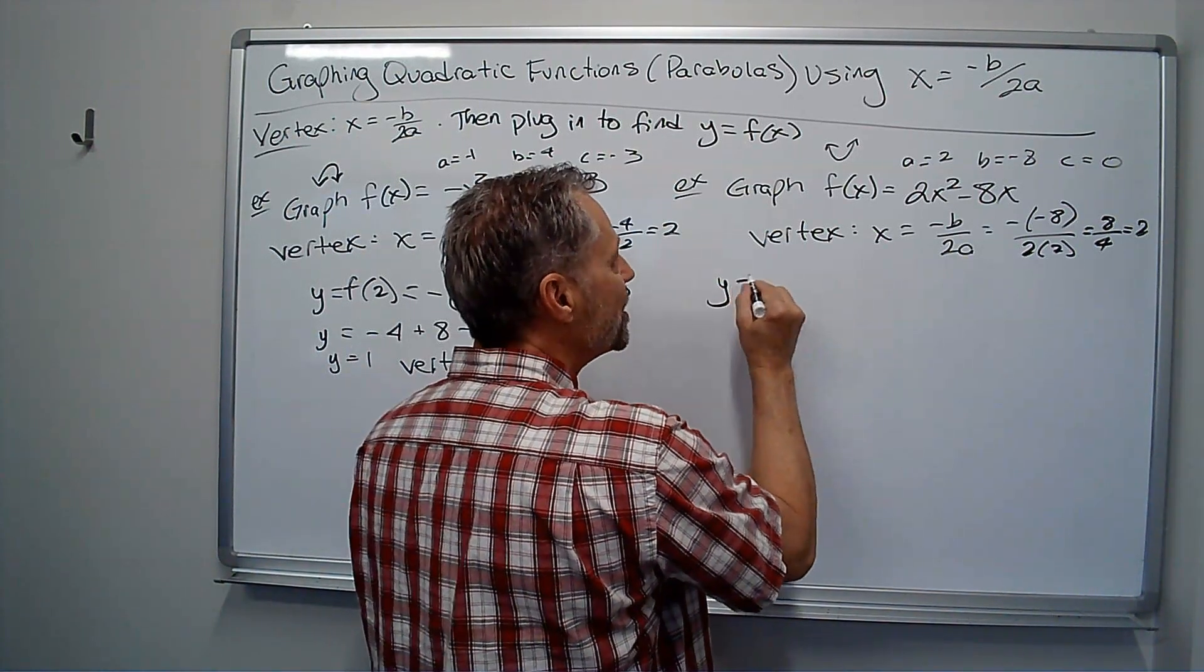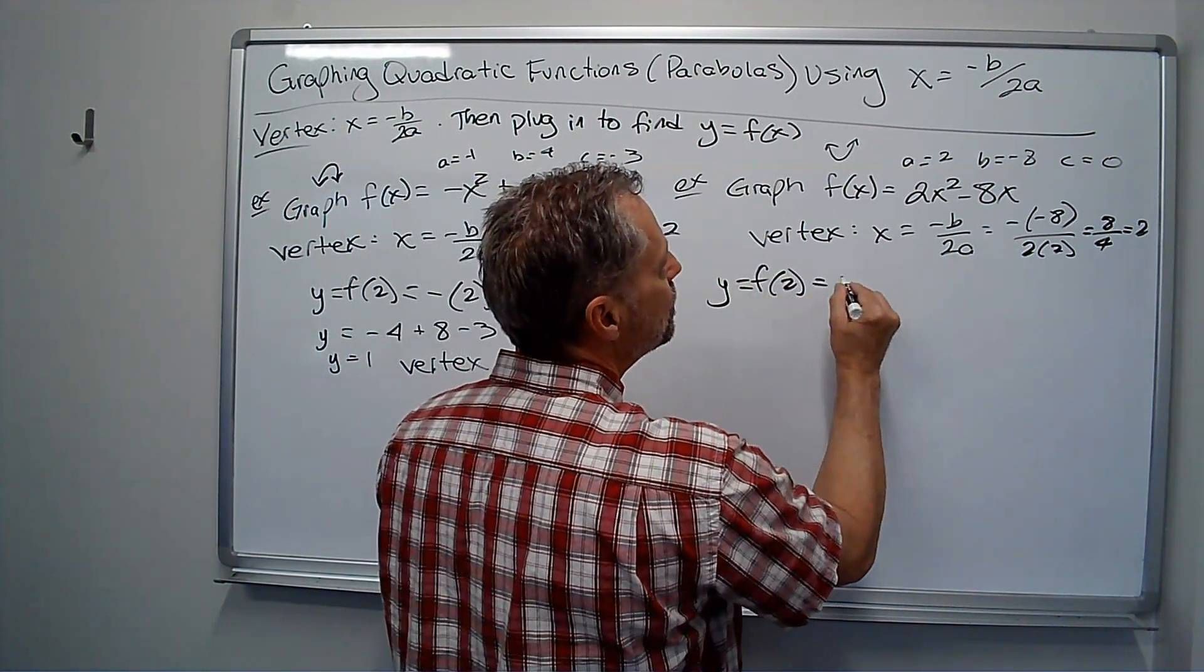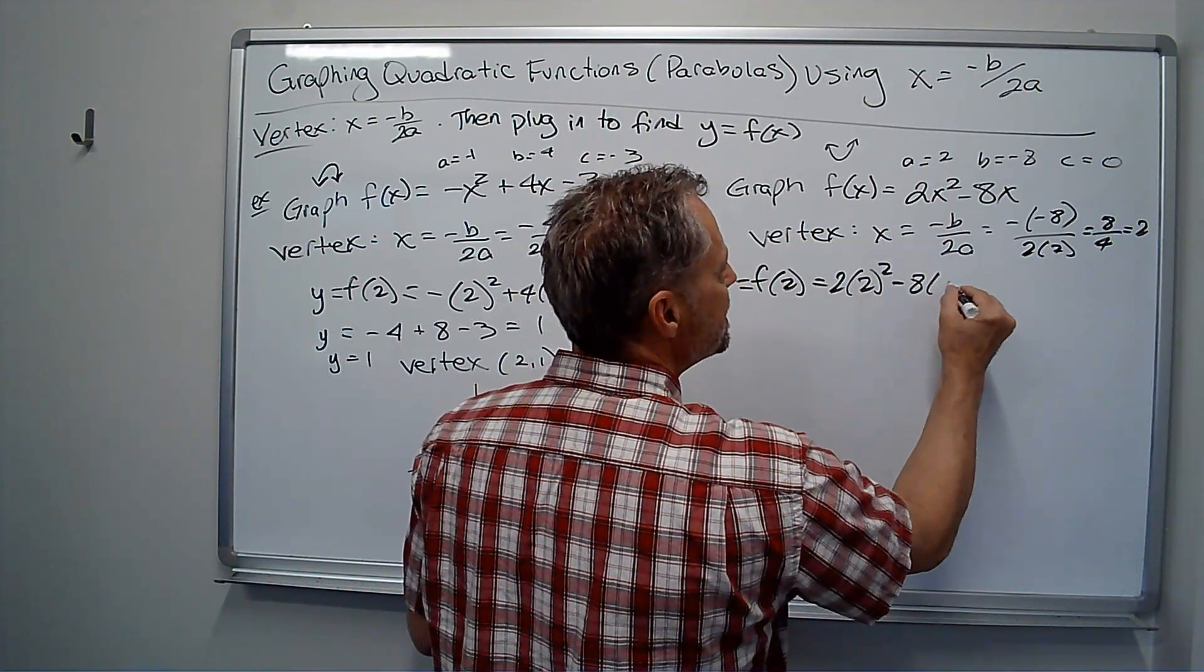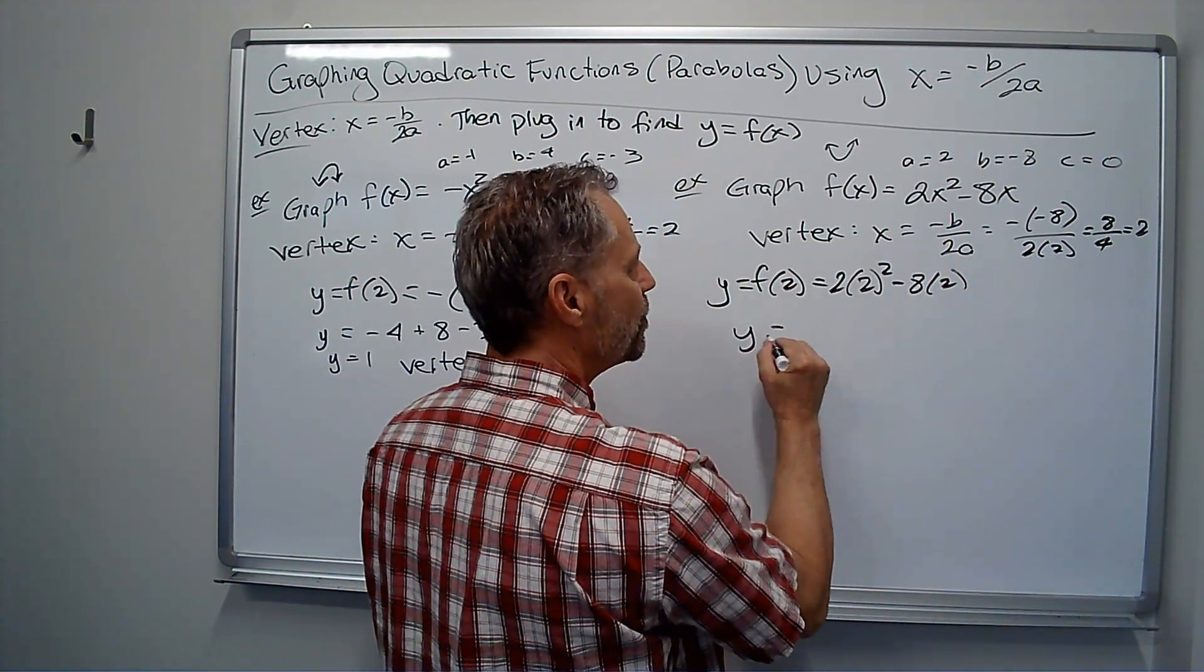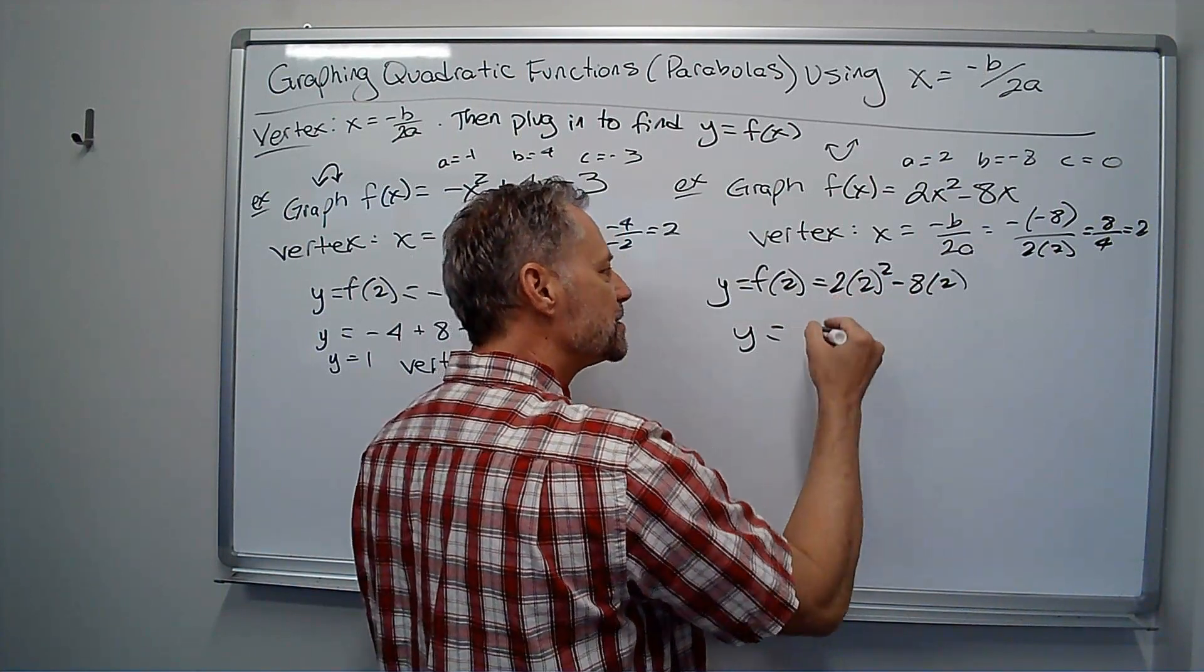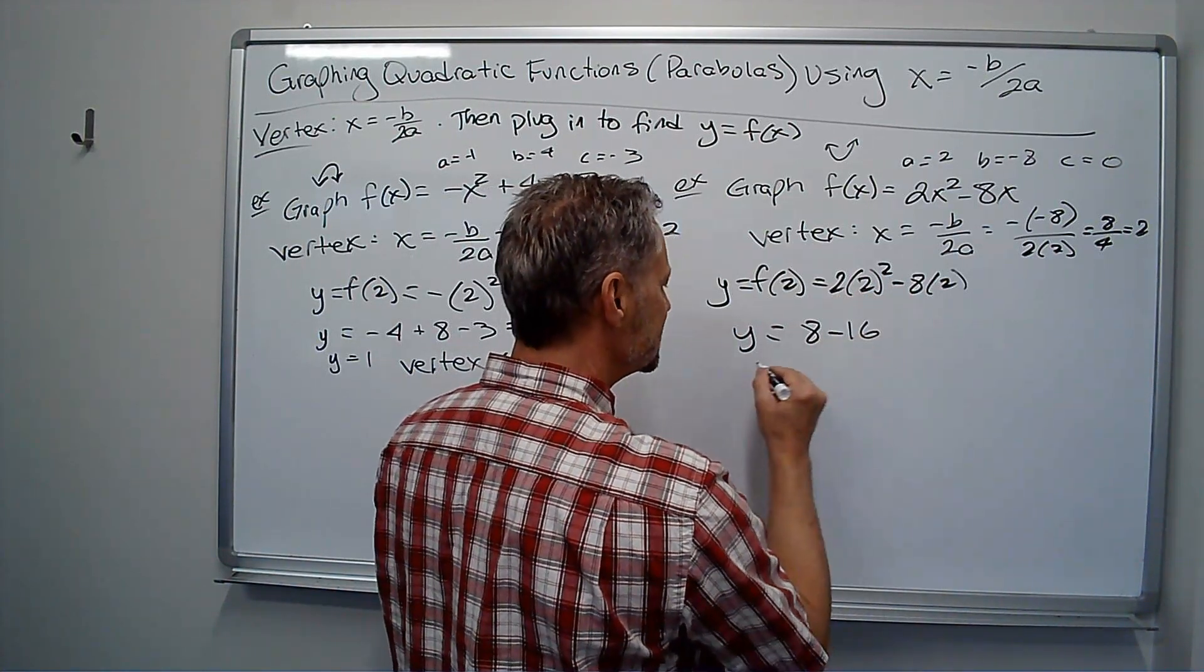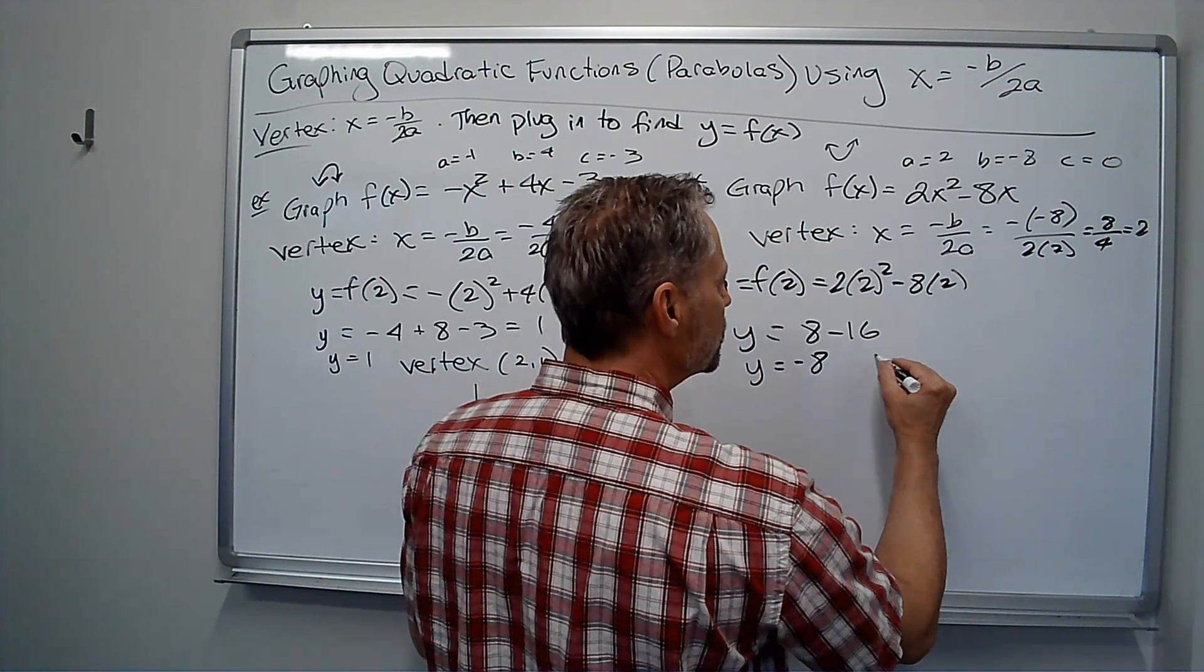So my y value is f of 2, 2 times 2 squared minus 8 times 2. So my y value, 2 squared is 4, 4 times 2 is 8, minus 16, I get y equals negative 8.